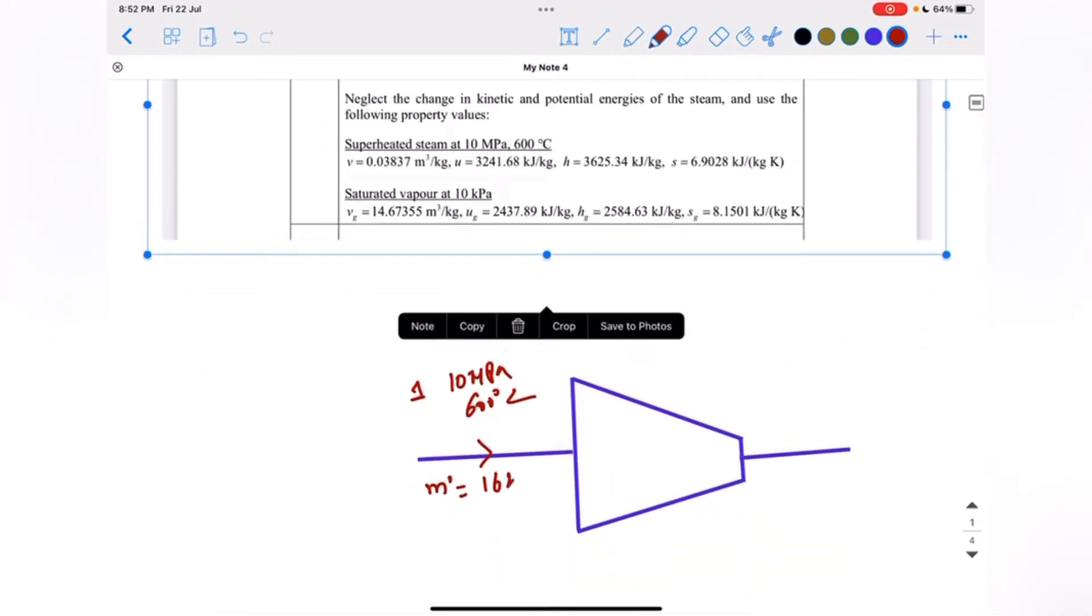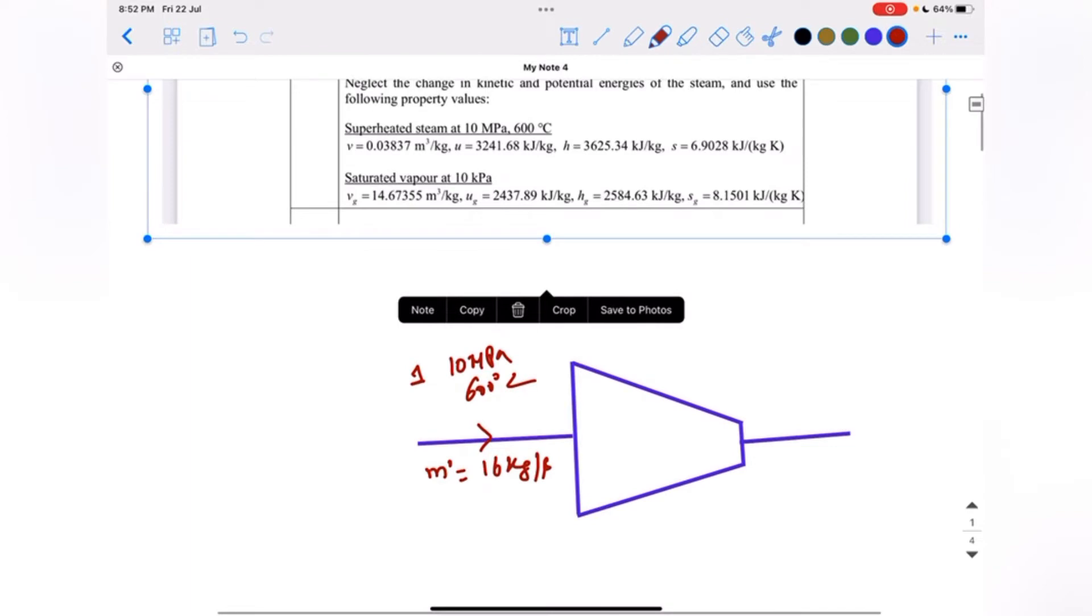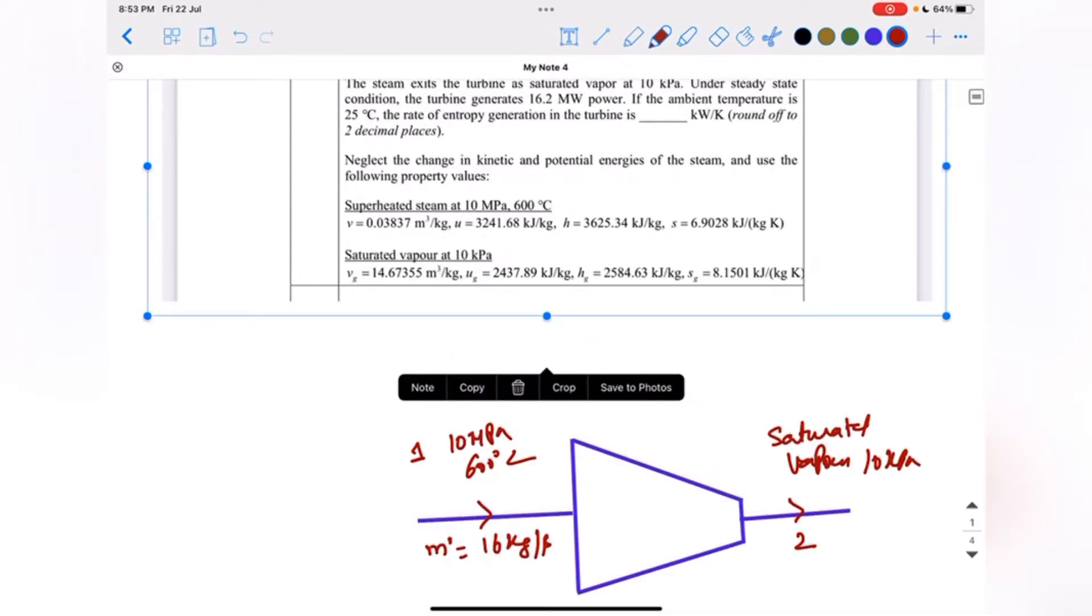The steam exits the turbine as saturated vapor at 10 kilopascal, so that is denoted as state 2, saturated vapor at 10 kilopascal. The turbine generates 16.2 megawatt power, which is W dot s. If the ambient temperature is 25 degrees Celsius, the rate of entropy generation in the turbine is what we have to find, neglecting change in kinetic and potential energies of the steam.